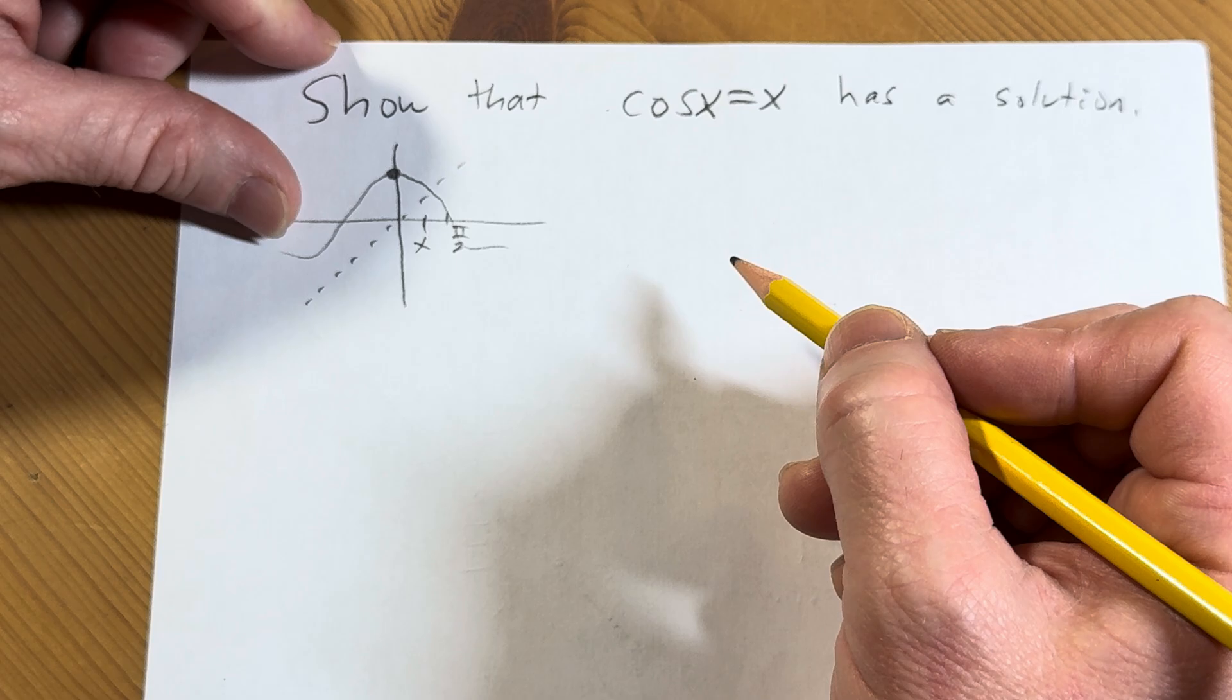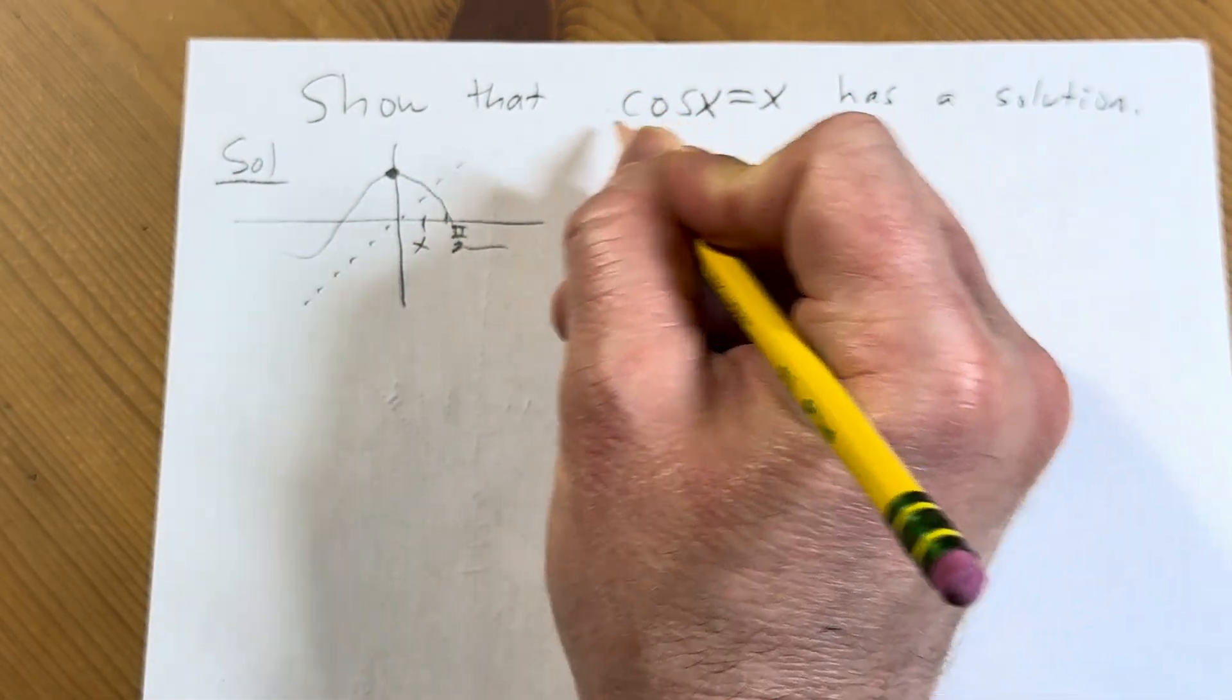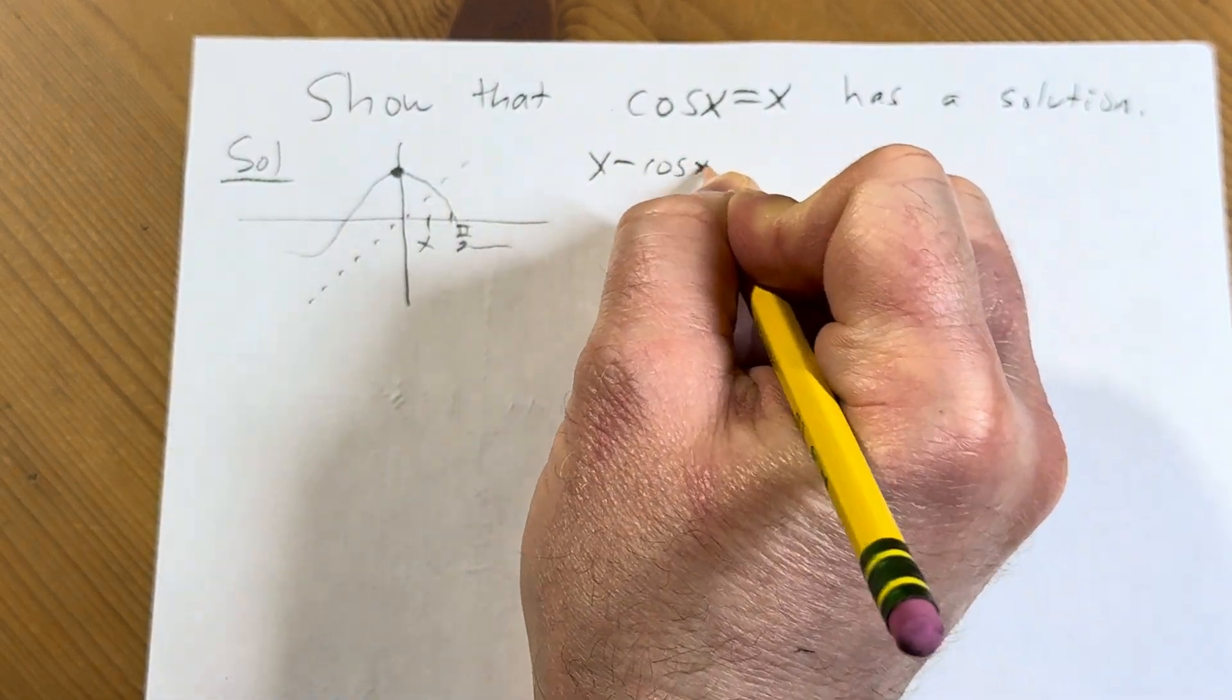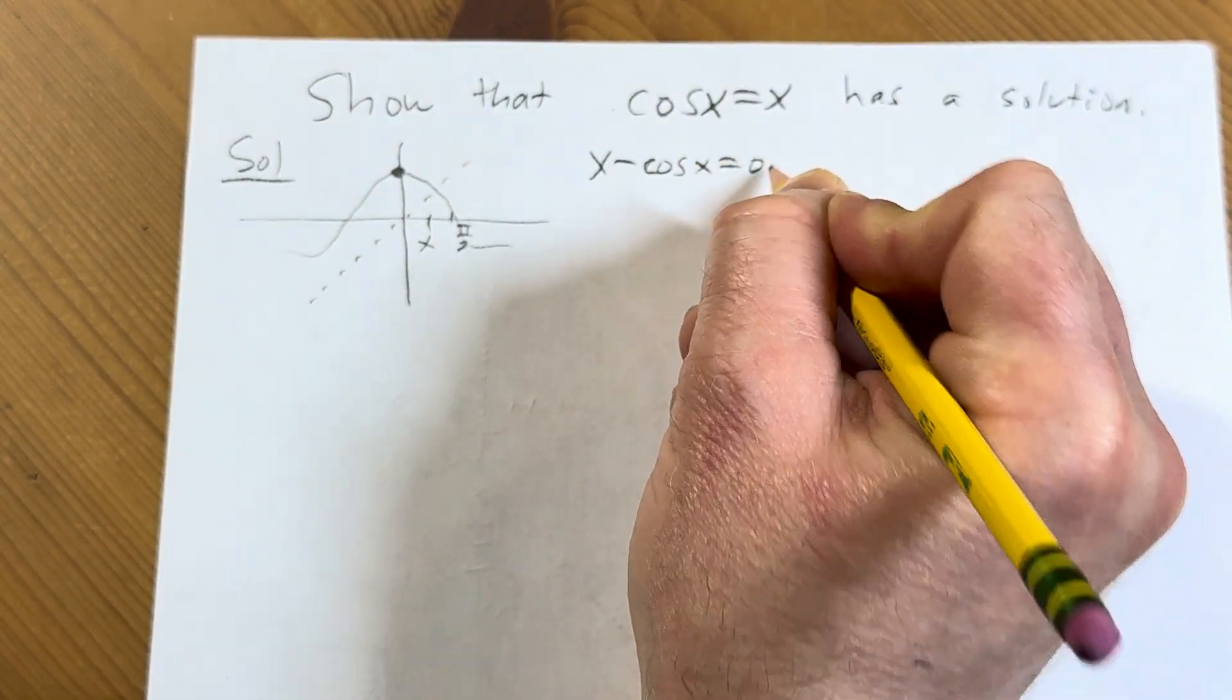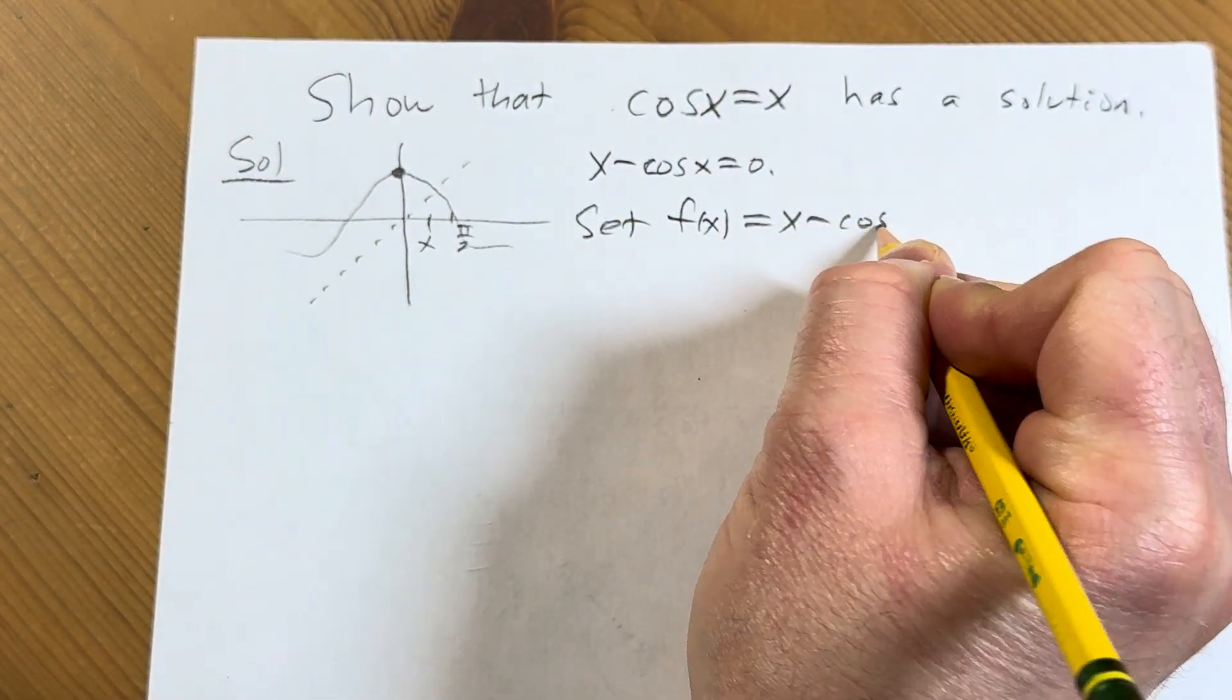All right, so to do that I'm thinking we can use the intermediate value theorem. So I'm going to start by subtracting cosine x from both sides. So we have x minus cosine x equals 0, and we're going to set f of x equal to x minus cosine x.